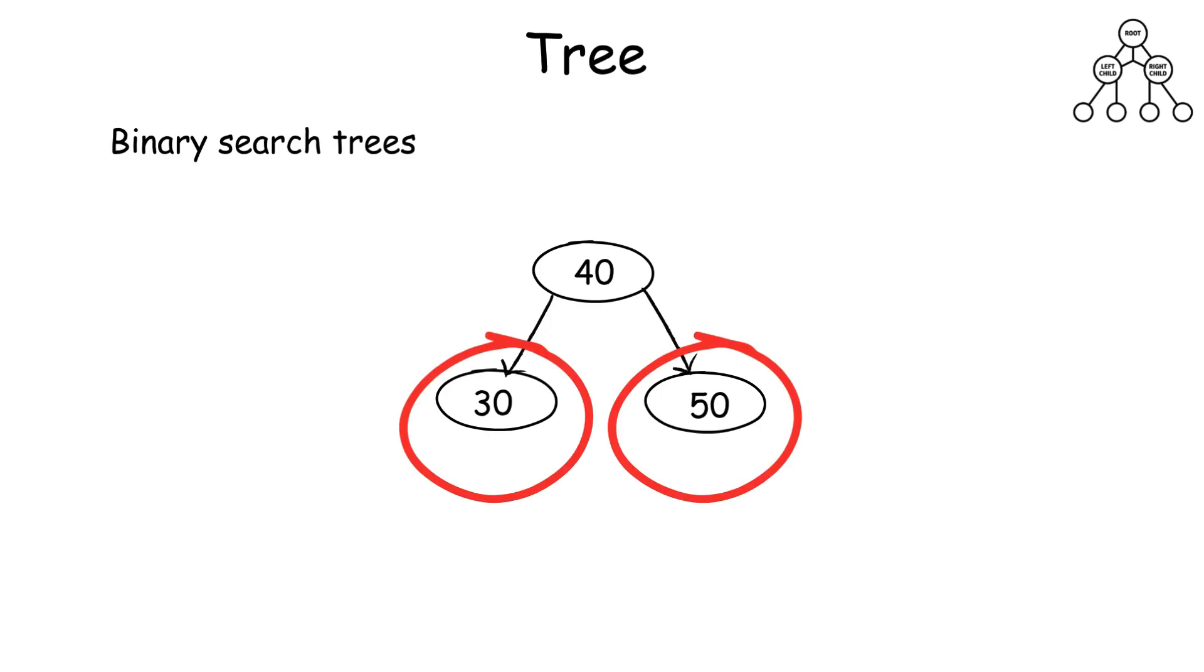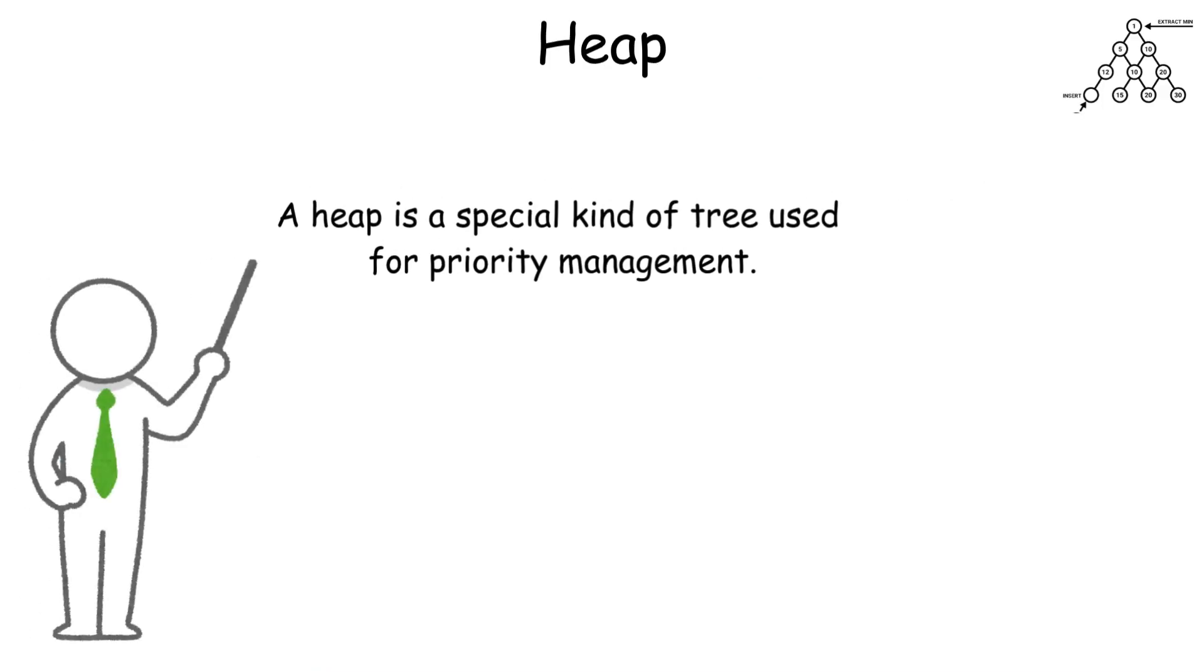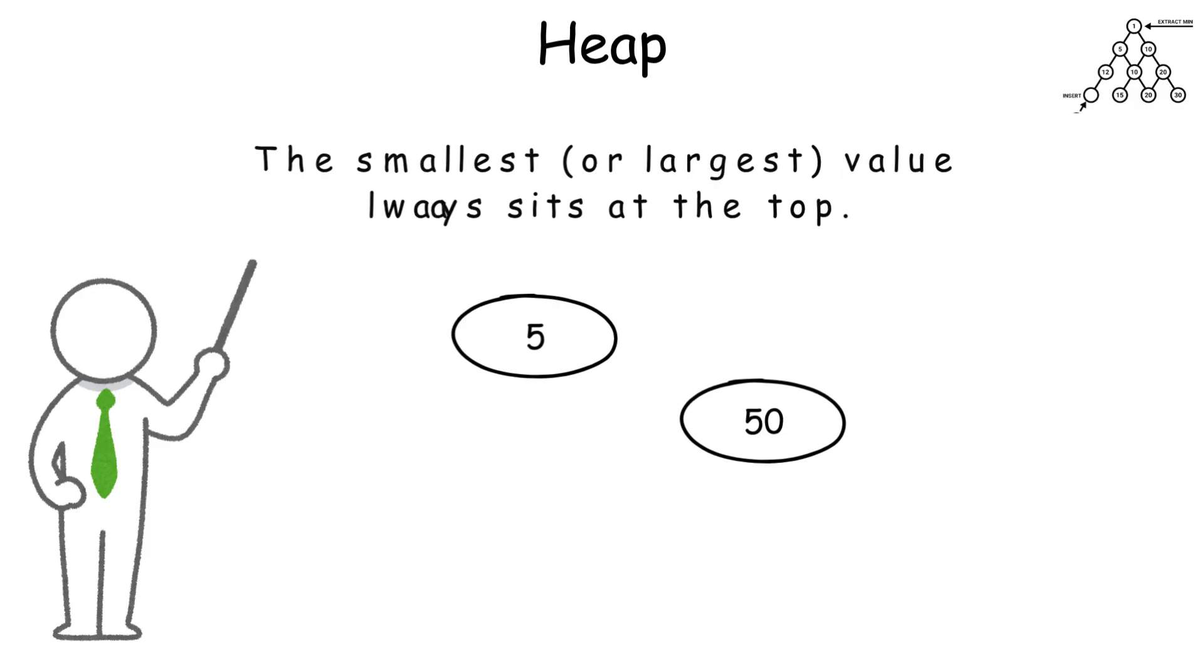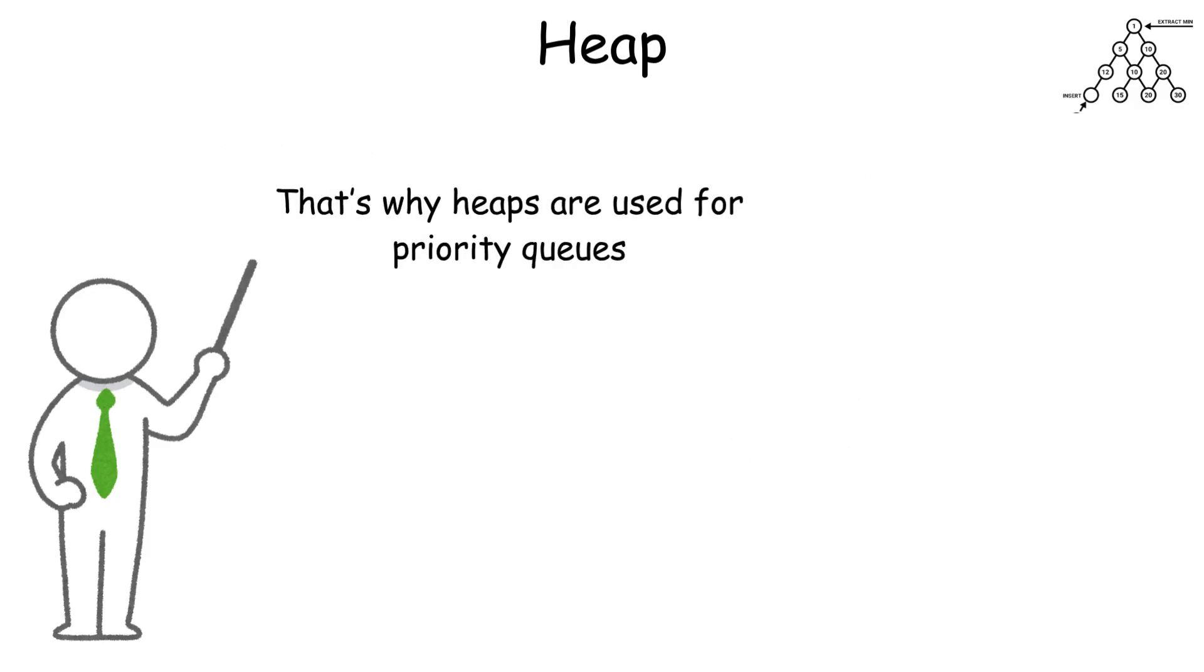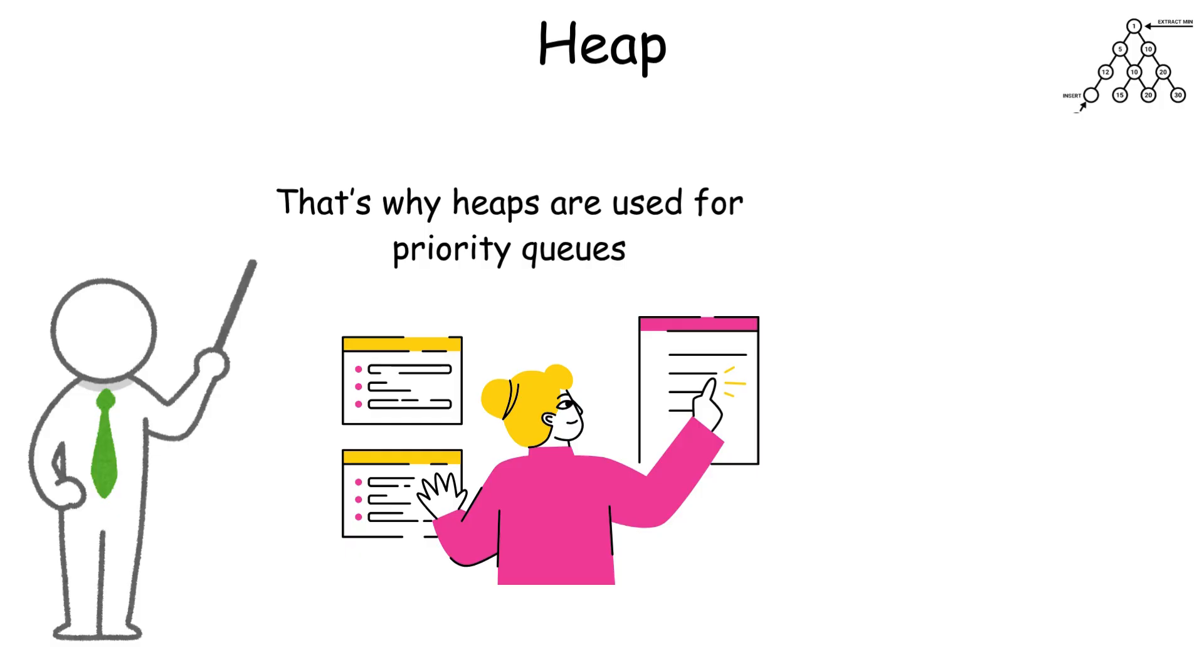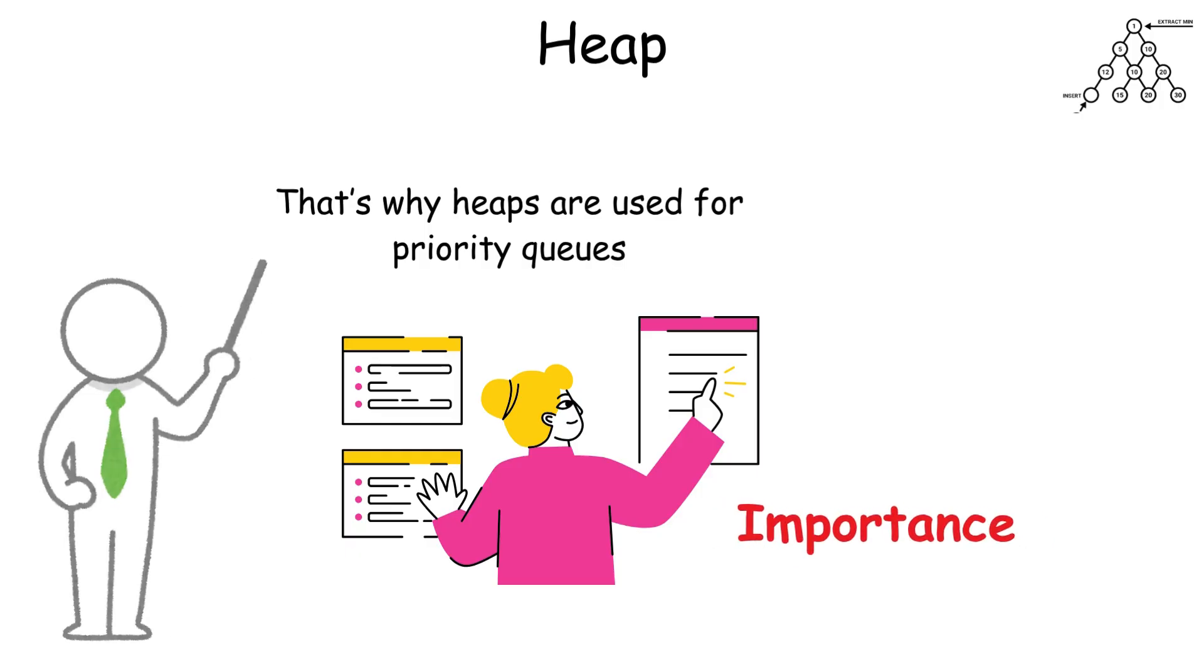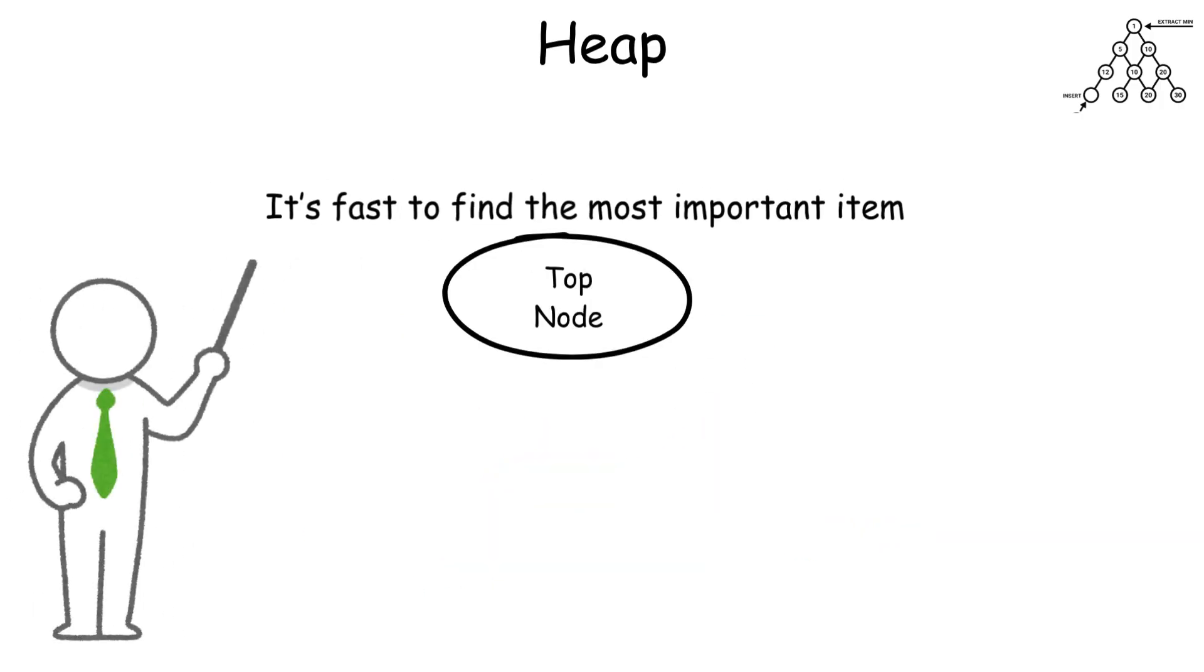Heaps: A heap is a special kind of tree used for priority management. The smallest or largest value always sits at the top. That's why heaps are used for priority queues, like managing tasks that must be done in order of importance. It's fast to find the most important item, but not great for searching arbitrary ones.